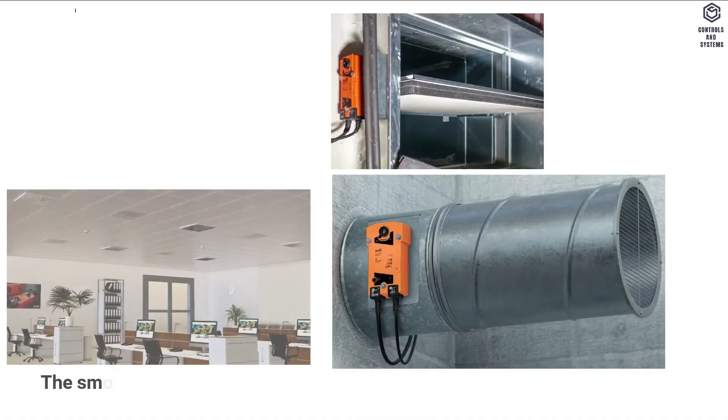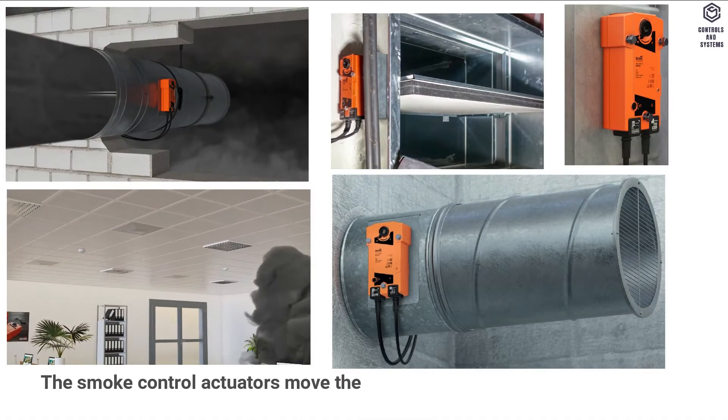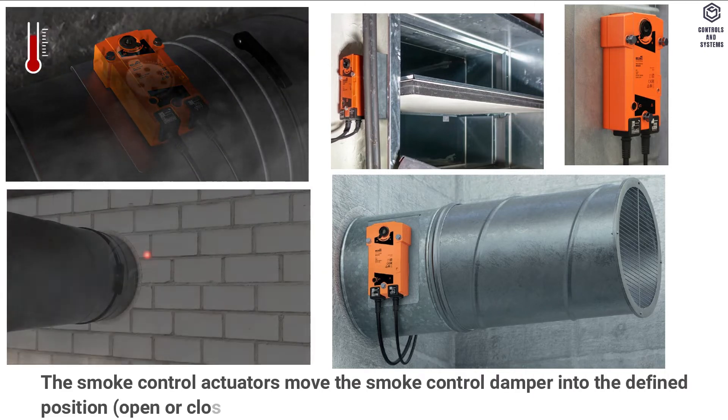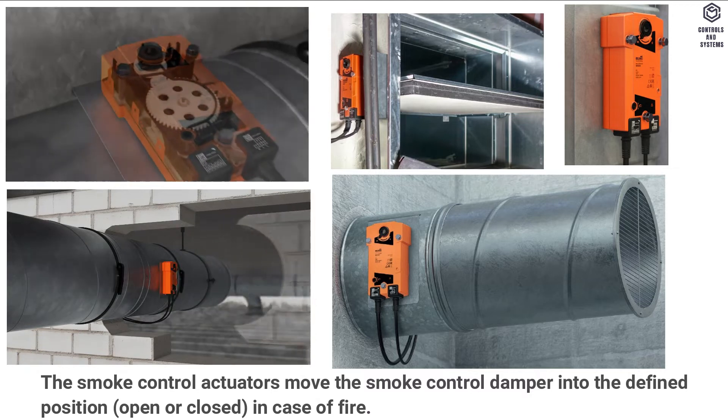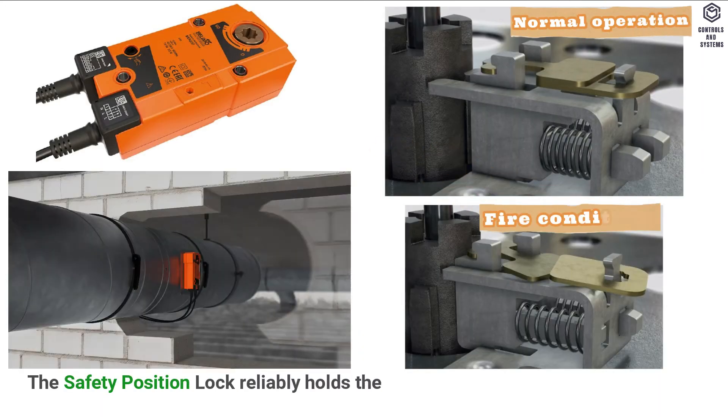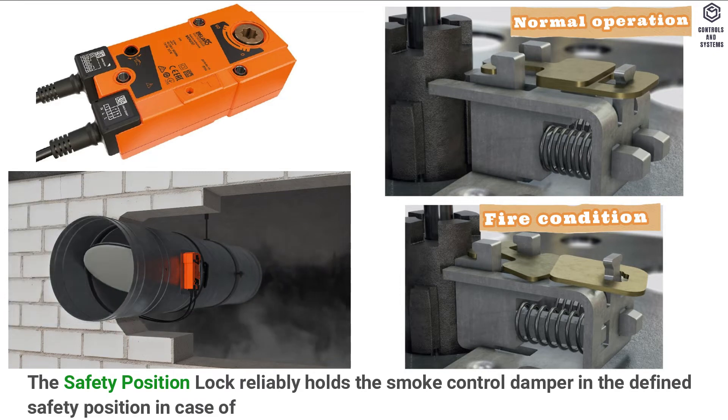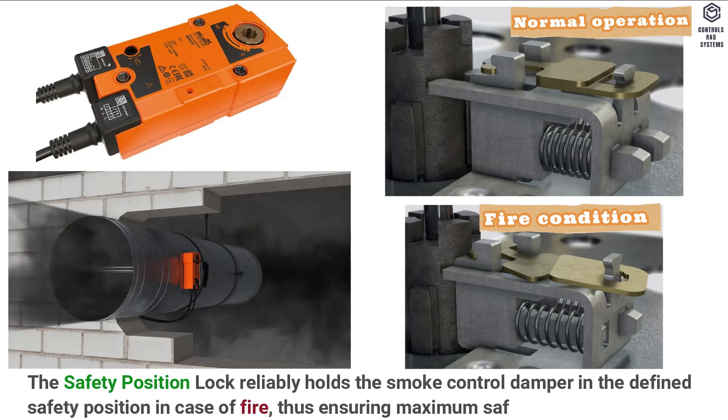Device overview. The smoke control actuators move the smoke control damper into the defined position, open or closed, in case of fire. The safety position lock reliably holds the smoke control damper in the defined safety position in case of fire, thus ensuring maximum safety.